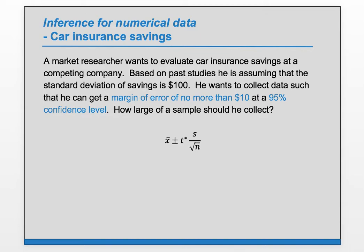We saw that when we make a confidence interval for a mean, we're usually using this structure here, using the t distribution. However, if the standard deviation is known as it is here, assuming that the standard deviation of savings is $100, we can use the z interval.